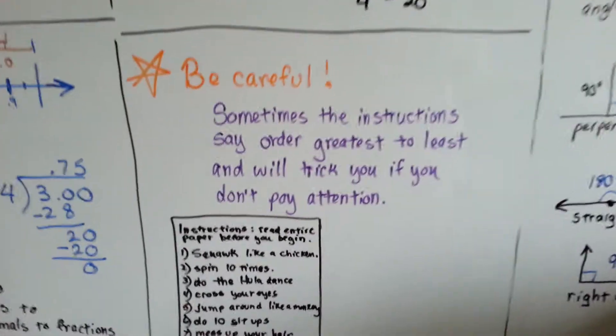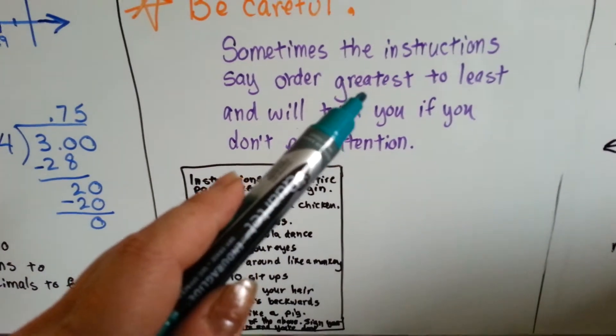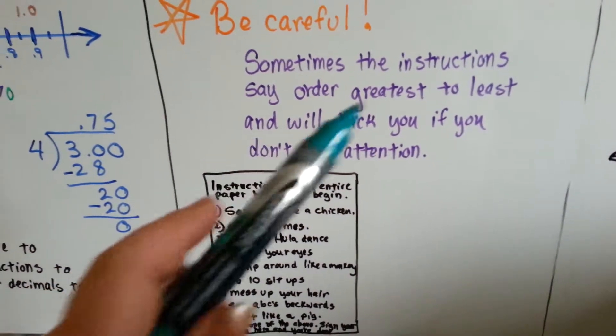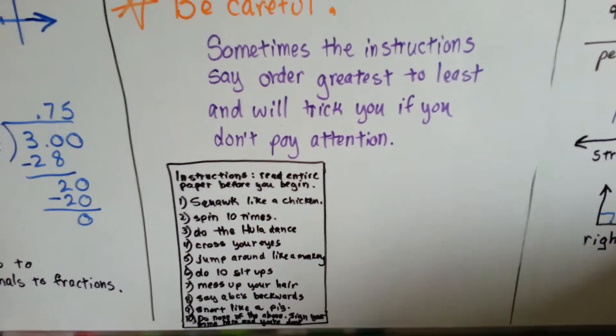Now, this is what you have to be careful about. Sometimes the instructions say order from greatest to least and you won't see that and you'll do least to greatest and it'll all get marked wrong because you didn't pay attention. It tricked you.